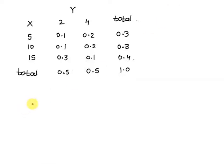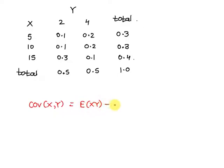Now the formula for the covariance between random variables X and Y is equal to the expected value of X times Y, minus the expected value of X times the expected value of Y. Suppose this is equation number one.